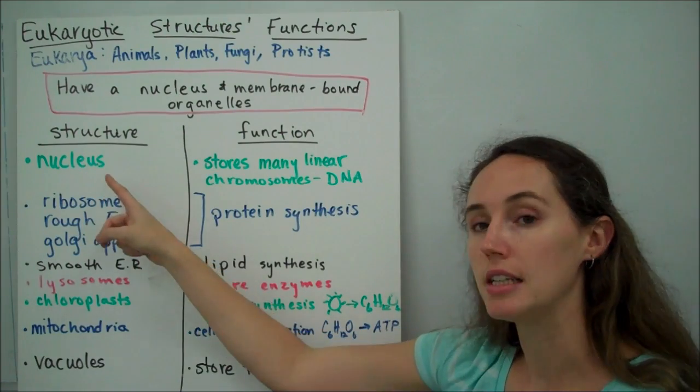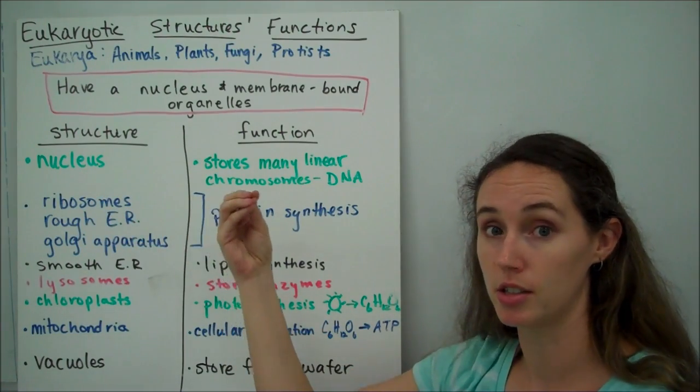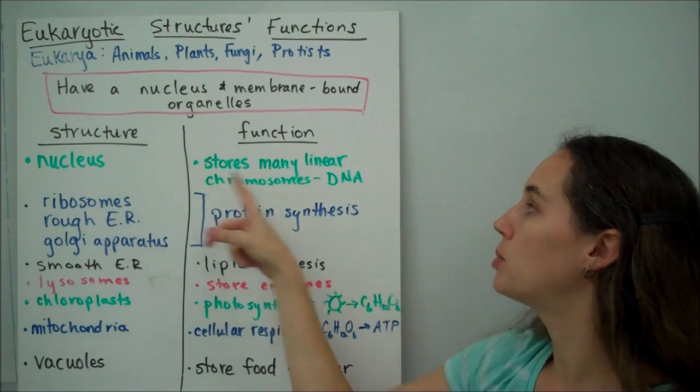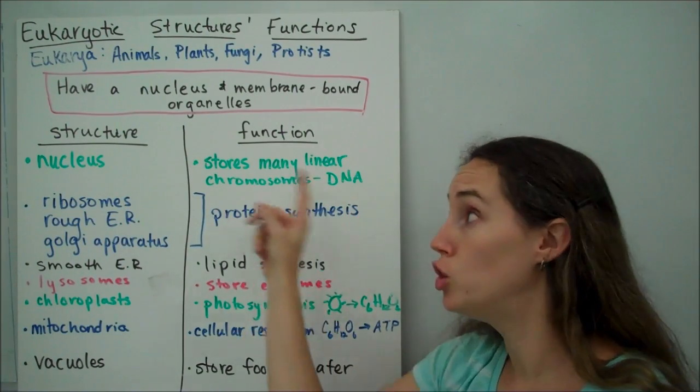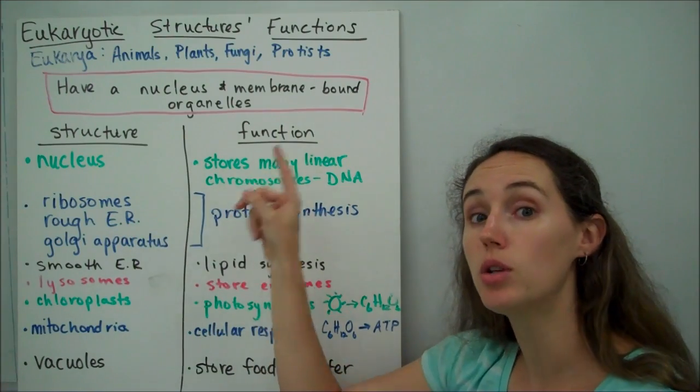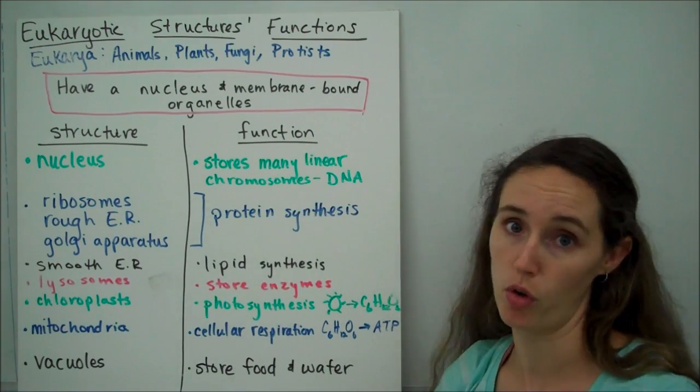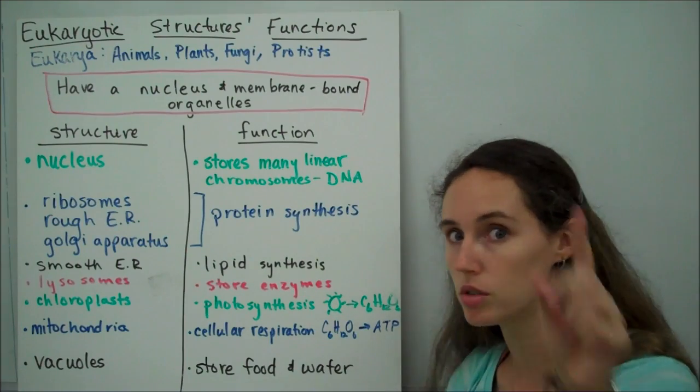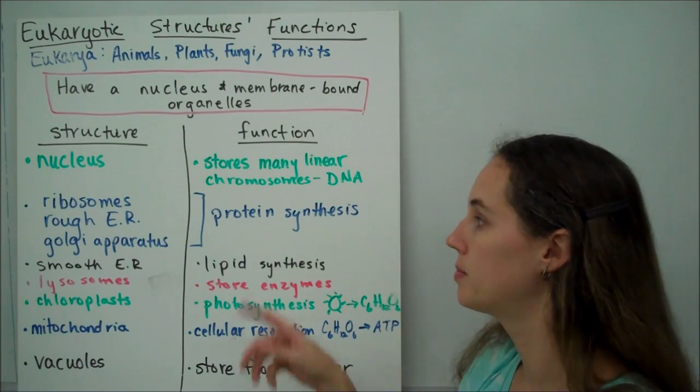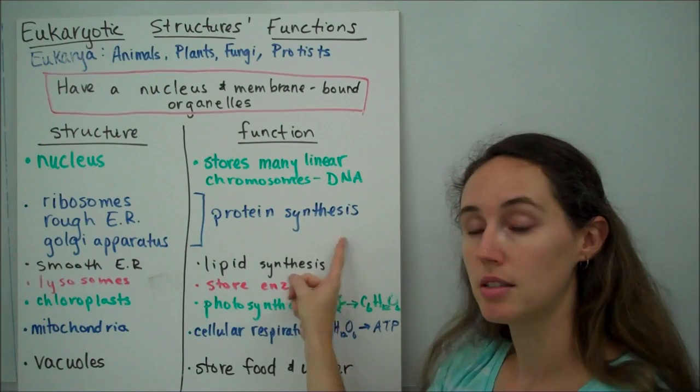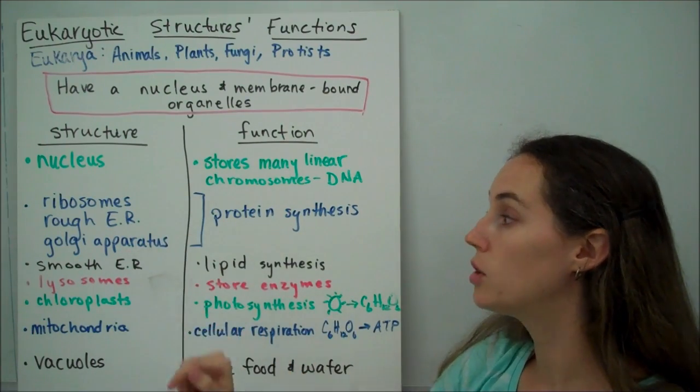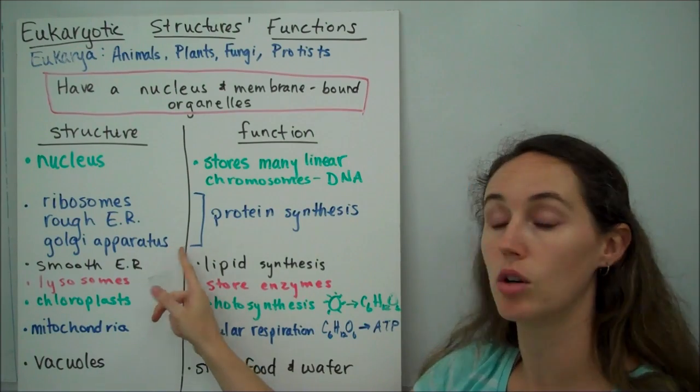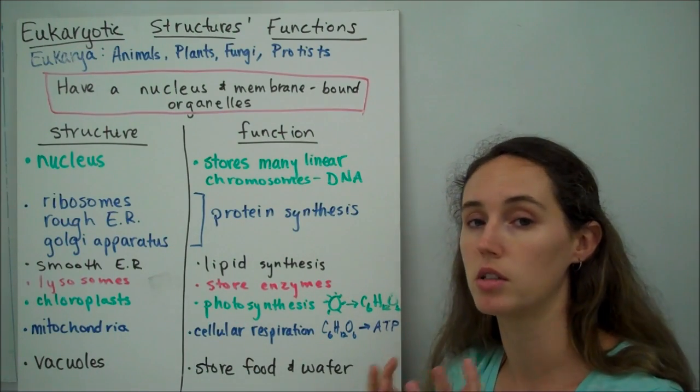So, the nucleus makes eukaryotic cells unique. And this is the place where DNA is stored. Now, the DNA in the nucleus is different in eukaryotic cells because there are many linear chromosomes as opposed to one single circular chromosome in a prokaryote. For protein synthesis, eukaryotic cells use ribosomes, rough endoplasmic reticulum, and Golgi apparatus. So, all those work together to synthesize proteins.